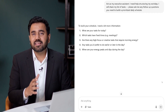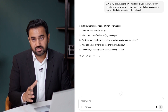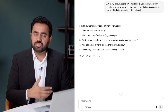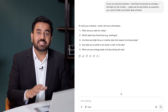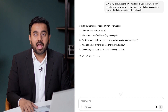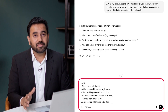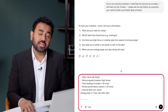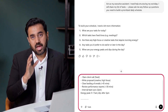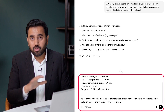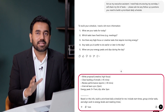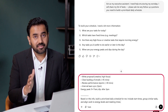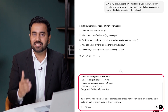ChatGPT responds by asking helpful follow-up questions to understand how your day may look, what's urgent, and where your energy is best spent. I answer these quickly and honestly to help build a realistic and effective schedule. Now that ChatGPT has all the context, I simply ask it to build my schedule for the day, prioritized and based on my energy and timing.